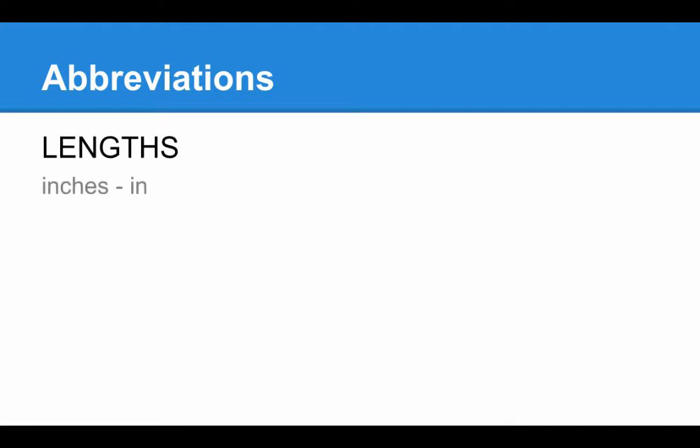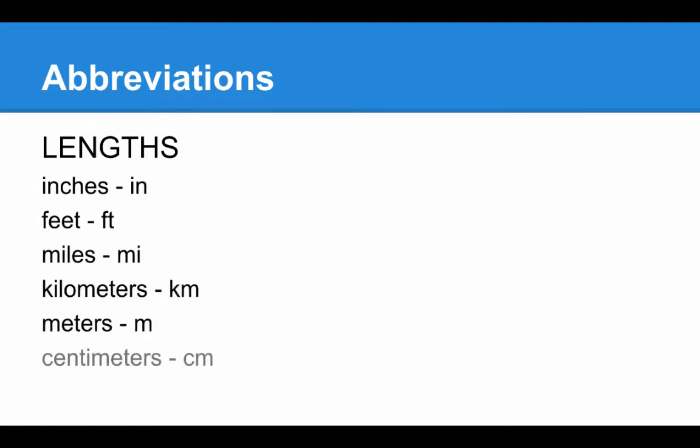Abbreviations. Inches is abbreviated IN. Feet is FT. Miles is MI. Kilometers is KM. Meters is M. Centimeters is CM. And millimeters is MM. If you don't know those, you're going to have to remember them.